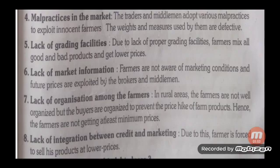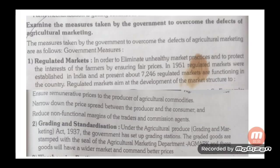Eighth defect: Lack of integration between credit and marketing. Farmers are not provided with credit facilities. Due to this, farmers are forced to sell their products at lower prices. These are the various defects of agriculture marketing. Now we will learn the measures taken by the government to overcome these defects.